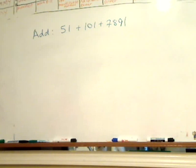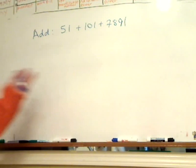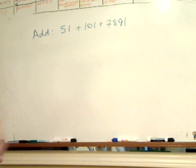Okay, so the next thing we want to review is adding. If you're given a series of numbers, for example, three numbers here: 51 plus 101, 7891, how do you go about adding those numbers?